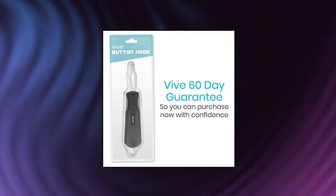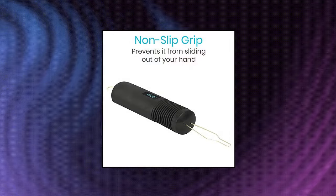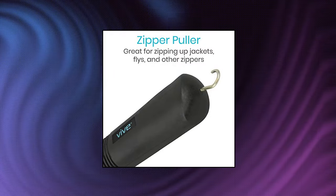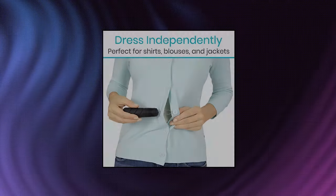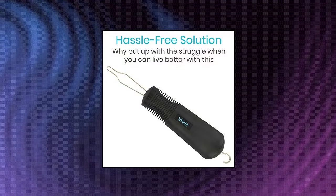Veve Button Hook Zipper Pull Helper dressing assist device tool for arthritis, easily button clothes. The non-slip handle provides a comfortable secure grip while enabling independent dressing, perfect for those with limited dexterity and those suffering from arthritis or carpal tunnel.